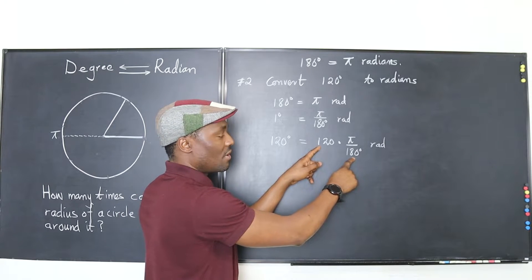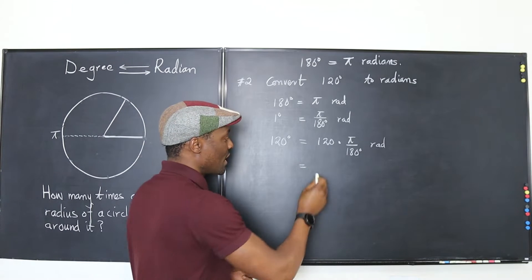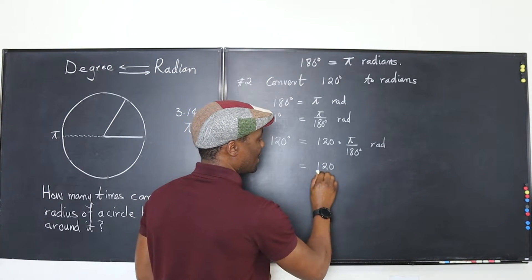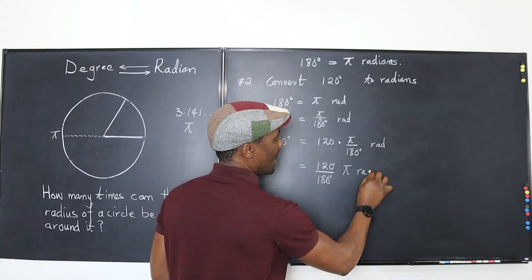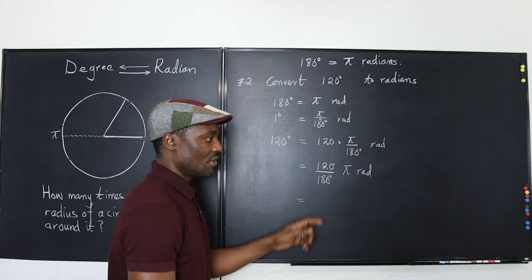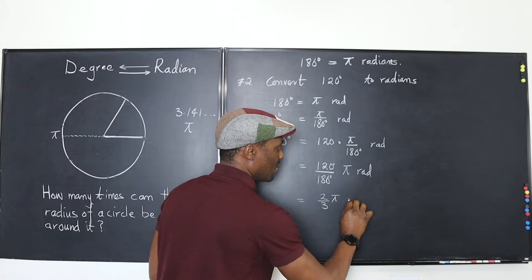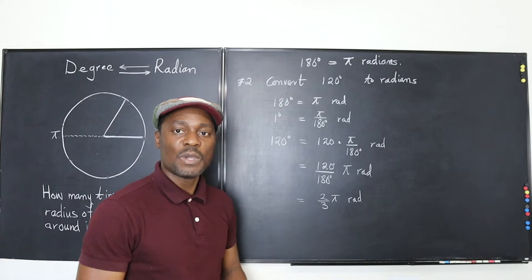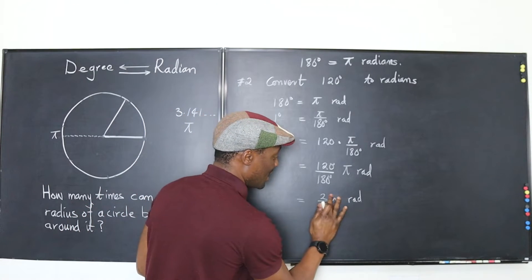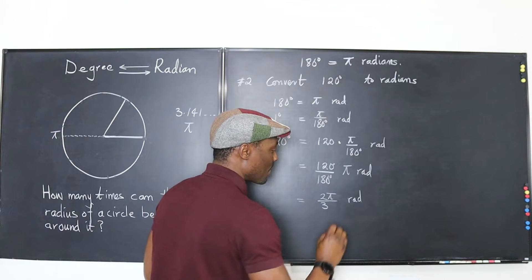Well the greatest common factor of 120 and 180... some people like rewriting it this way: 120 over 180 and then they put pi here. If you do that this is going to give you 2 over 3 pi radians, or 2 pi over 3. That's a nice way to write it. Let me write it that way because that's the most common way to write it: 2 pi over 3.